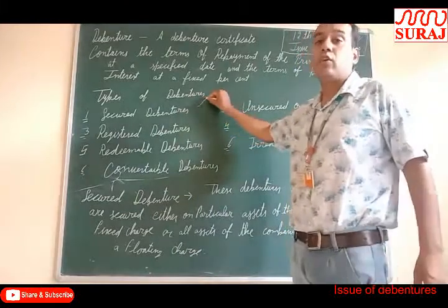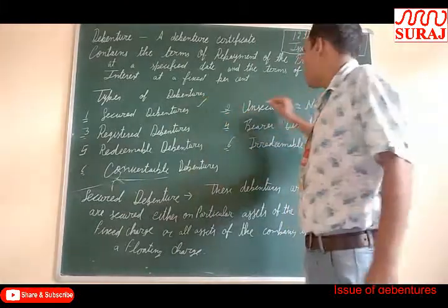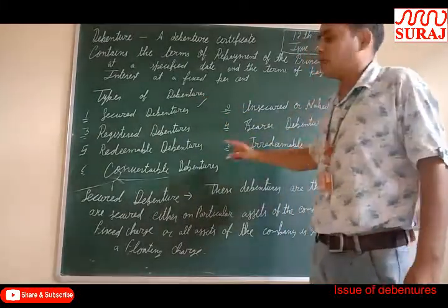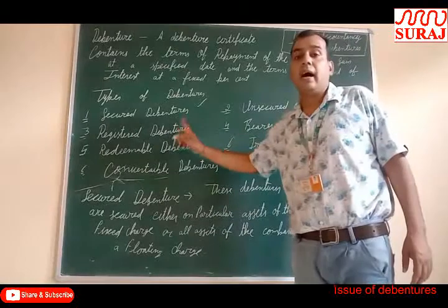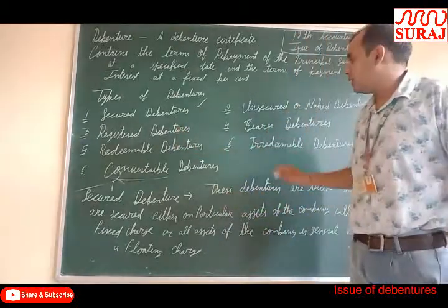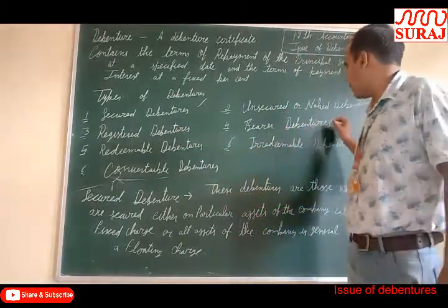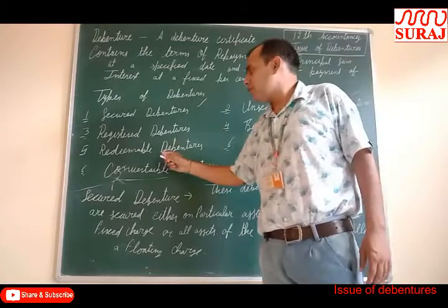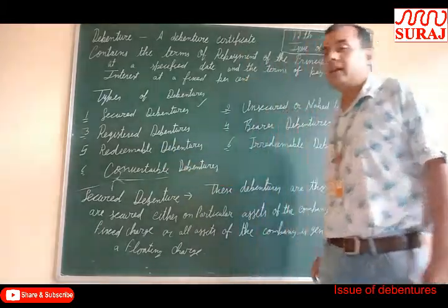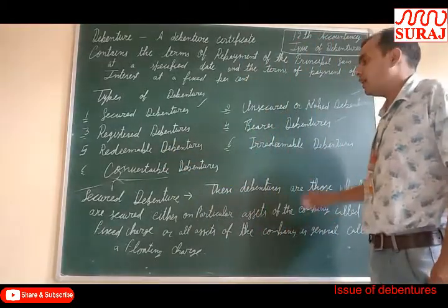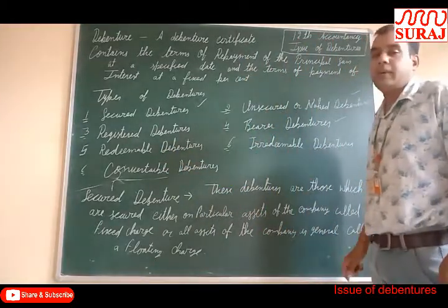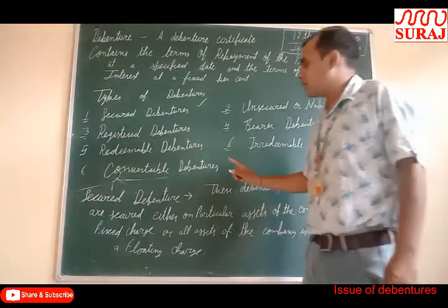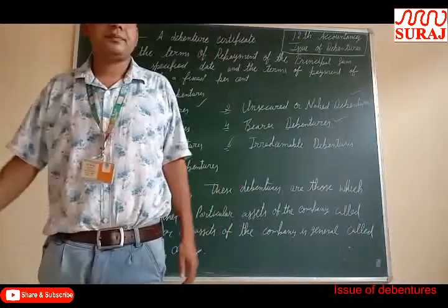First, secured debenture. Second, unsecured or naked debenture. Third, registered debenture. Fourth, bearer debenture. Fifth, redeemable debenture. Sixth, irredeemable debenture. And seventh, convertible debenture.